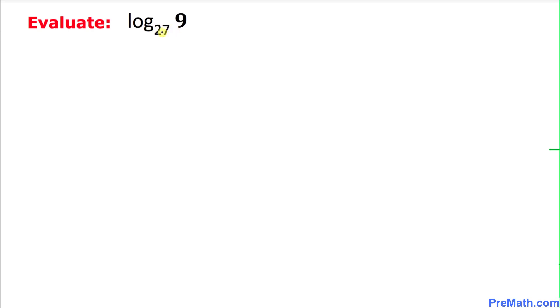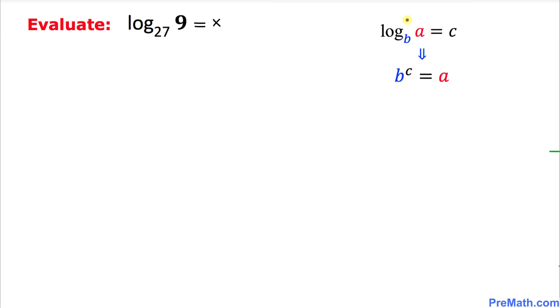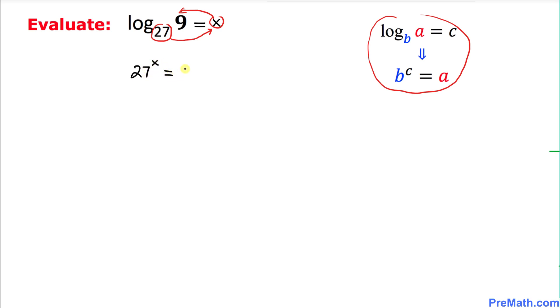Here is our next example: log of 9 with the base 27. We set this equal to x and convert the logarithmic equation into an exponential equation using the same rule. Our base is 27, so 27 to the power x equals 9. That gives us the exponential equation 27^x = 9.